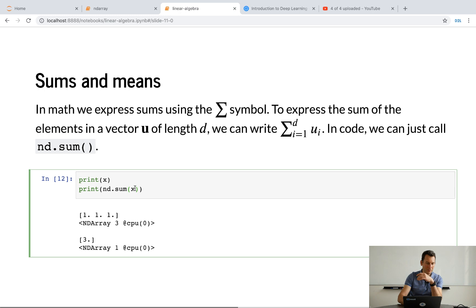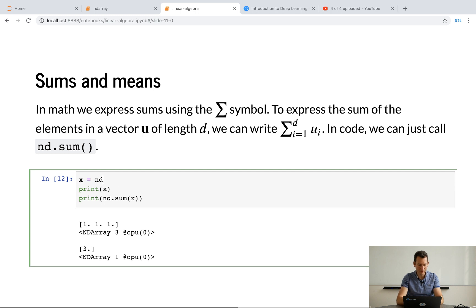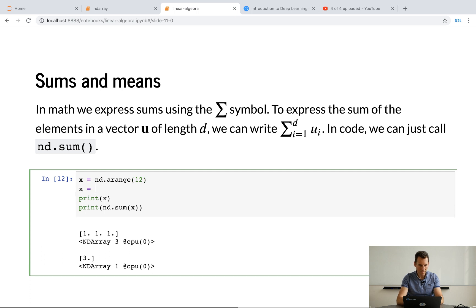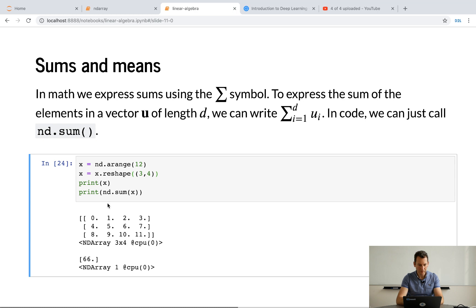Now, if I had, say, a two or three-dimensional object, then maybe I might want to sum over only some of the dimensions, in which case, okay, let's try that. X is in the range of 12. Okay, let's see, 12. So, if I do this, right? So, it'll still give me 66 and just that sum.